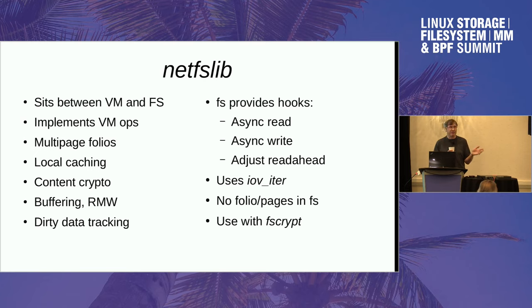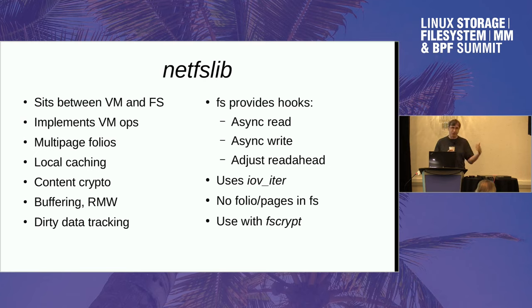It removes around 1,000 to 2,000 lines of code from CIFS. I'm working on the write helpers - I've got them mostly working apart from truncate. I tried to build it on top of maple trees and that was too hard, so I've massively simplified it using a linked list for now to do more interesting things later. I'm going to look at doing truncate next week and hope to get the write helpers upstream in the next merge window.